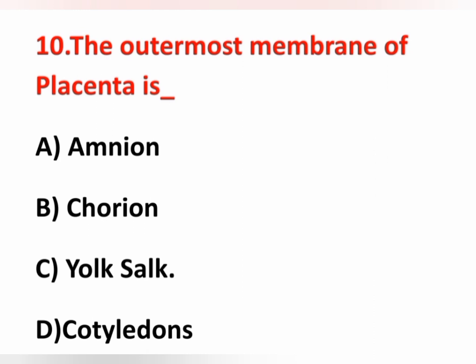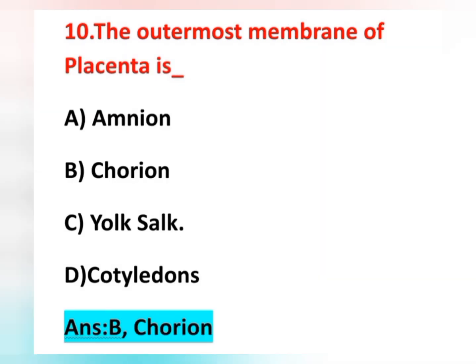Tenth question: The outermost membrane of the placenta is called — option A amnion, option B chorion, option C chorionic sac, option D cotyledon. The correct answer is option B — chorion. The outermost membrane of the placenta is the chorion, and the innermost membrane is the amnion. Option B chorion is the correct answer.